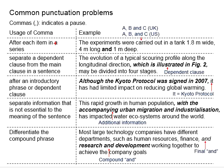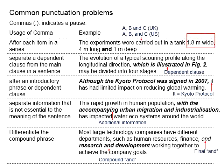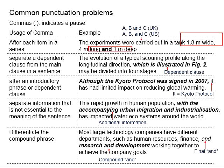First, you use a comma after each item in a series. When you have several items, at the end of each item there will be a comma indicating there is a series. The example sentence is: 'The experiments were carried out in a tank 1.8 meters wide, 4 meters long, and 1 meter deep.' You see there is a series of dimensions for the tank. Therefore, you will need a comma to separate the items within the series.